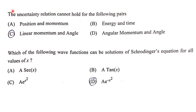The uncertainty relation cannot hold good for which of the following pairs? We know the uncertainty relation holds for position and momentum, energy and time, and angular momentum and angle. Therefore, option C is the correct answer.